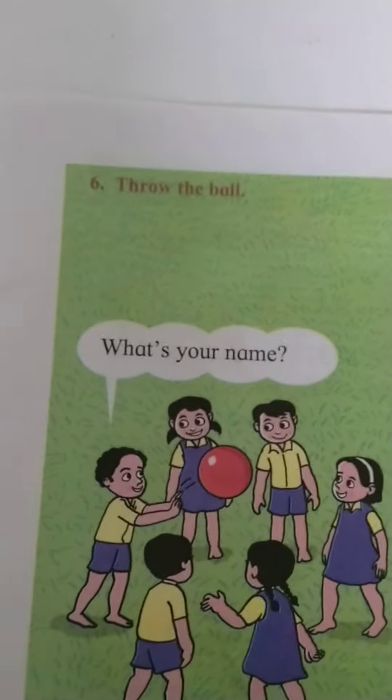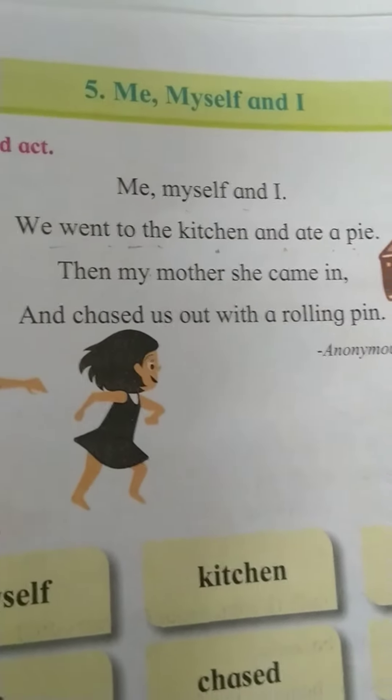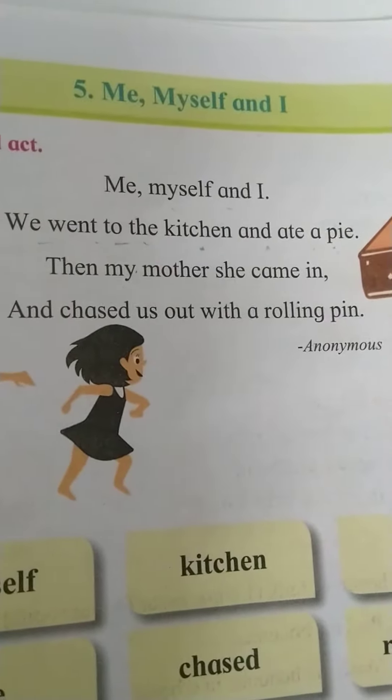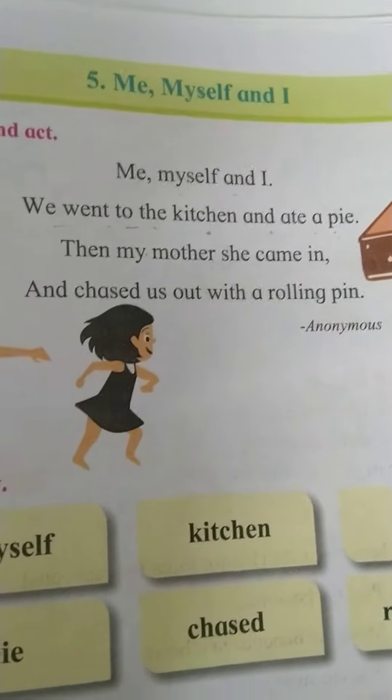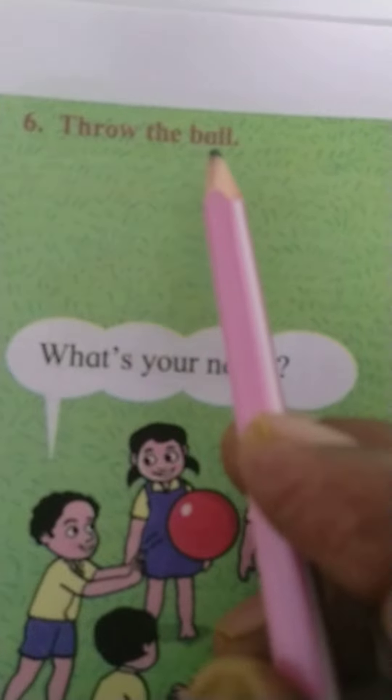Hello children, we are going to learn lesson 5 of unit 5: 'Me, Myself and I'. Page number 49 is completed. Now page number 50 — activity six: 'Throw the Ball'.